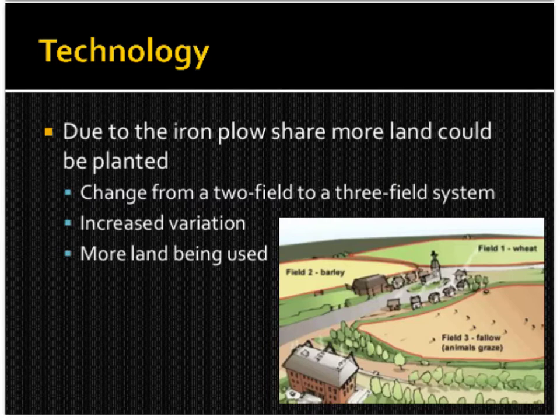Due to the iron plowshare, more land could now be planted. There's also a change from a two-field to a three-field system, which helped increase variation. In field one it's wheat, field two is barley, and field three is fallow — where animals graze. There's a constant rotation. In the field left empty, the animals are fertilizing it, their hooves soften the soil, and it sits for about a year gaining nourishment. The big idea is that more land is being used.